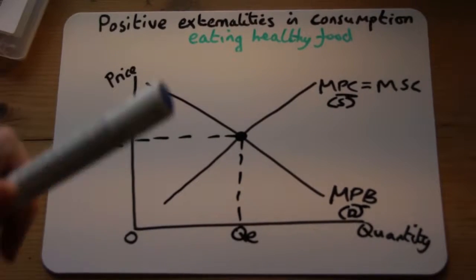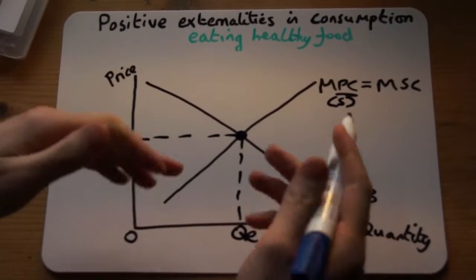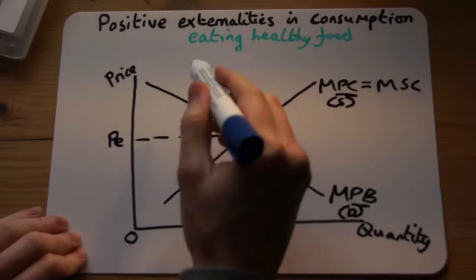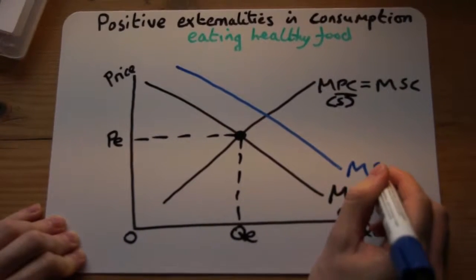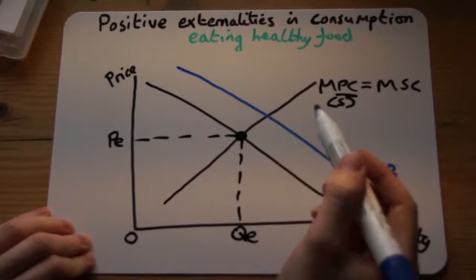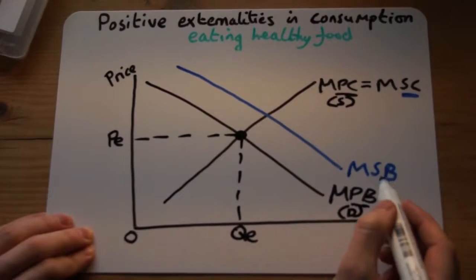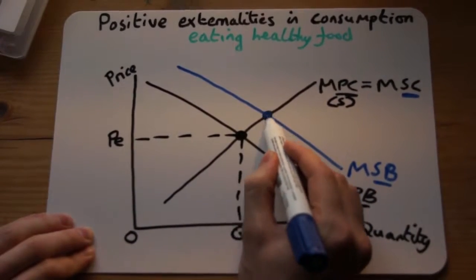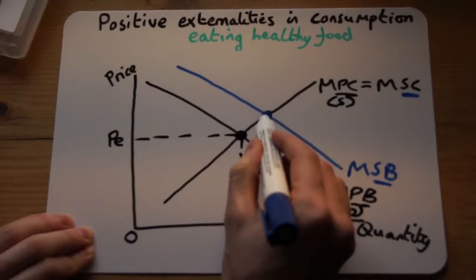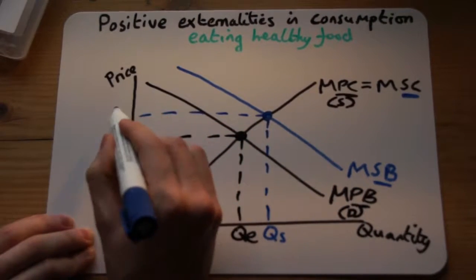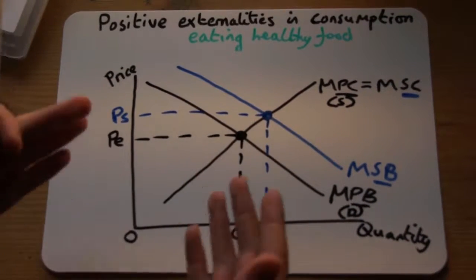We know that healthy food is good for society, so we need to add in a social benefit line. We want there to be more consumed in society, so we shift the curve to the right — the marginal social benefit line goes to the right. If we find the socially optimum point where the social costs and social benefits of eating healthy food are equal, we know there should be a higher quantity consumed. The price is higher too, but that's because we would be willing to pay a higher price if we understood how good it was for society.